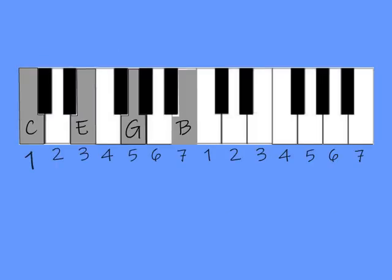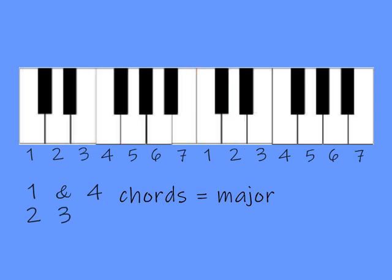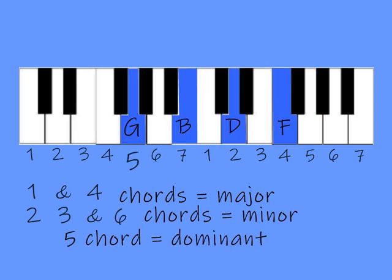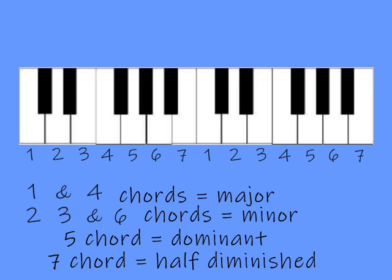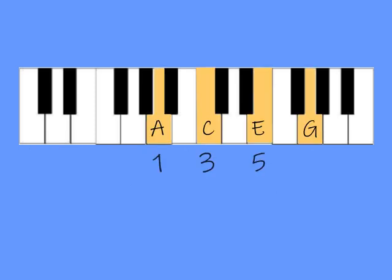We saw earlier that in the major scale there are two major 7 chords, three minor 7 chords, a dominant 7 chord, and a half diminished chord. We also saw that a 7 chord is made up of the 1, 3, 5, and 7 notes of a given scale. So that means where there's a chord, there's a scale.